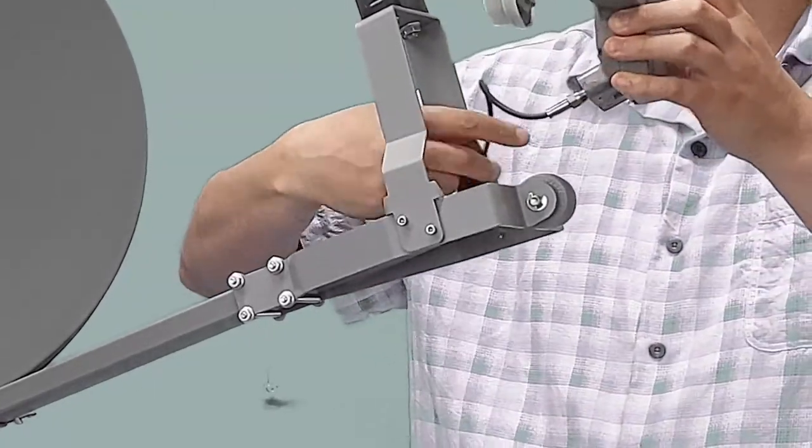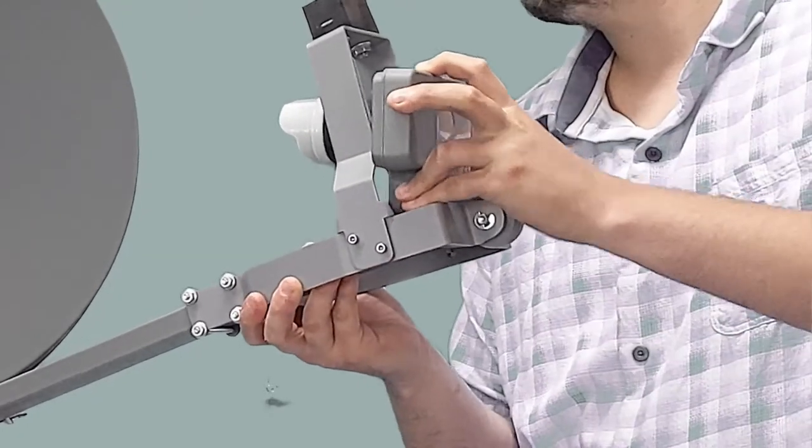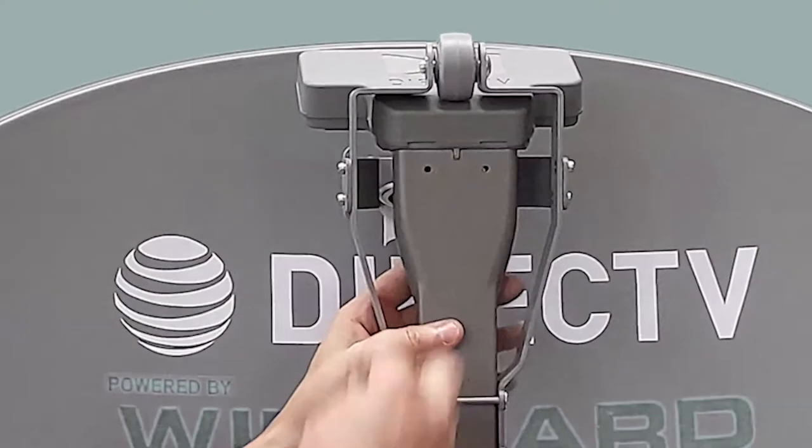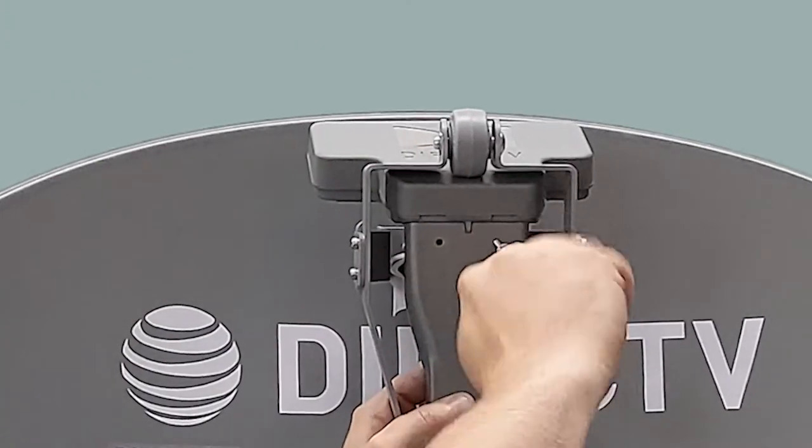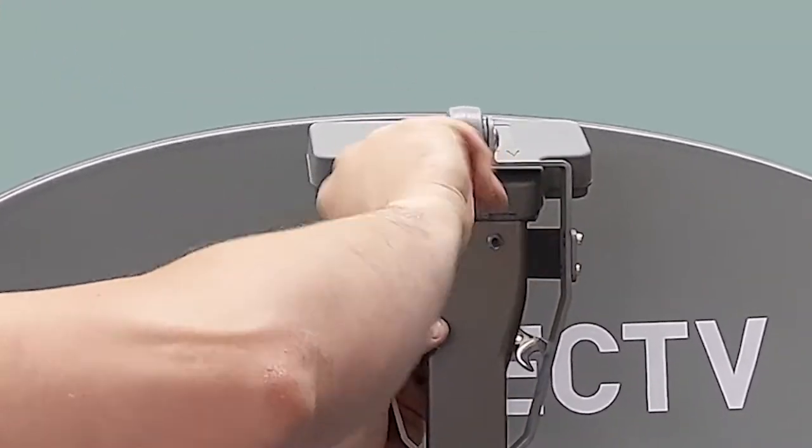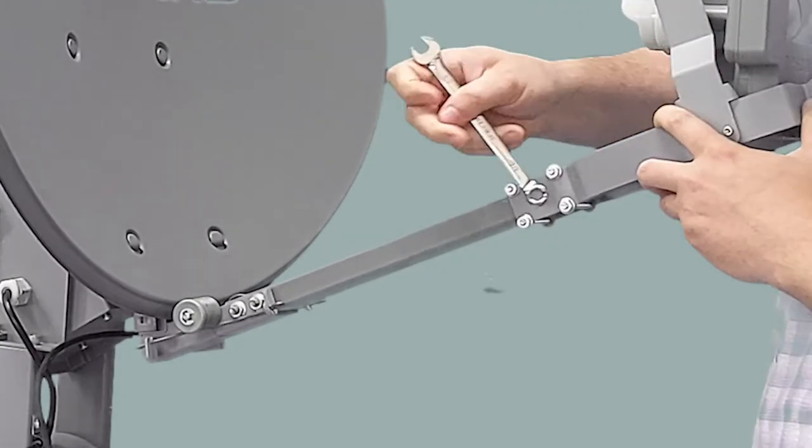Slide the LMB into the end of the arm, adjusting the LMB guard as necessary. Slide the 2 screws into the holes and use the nylock nuts to secure the screws and LMB in place. Tighten the 4 nuts holding the LMB guard in place using the 3/8ths wrench.